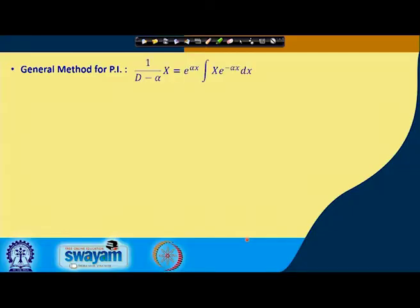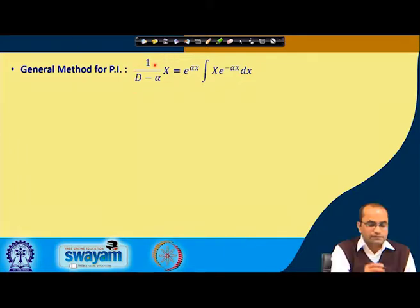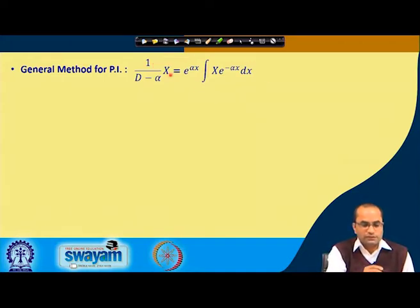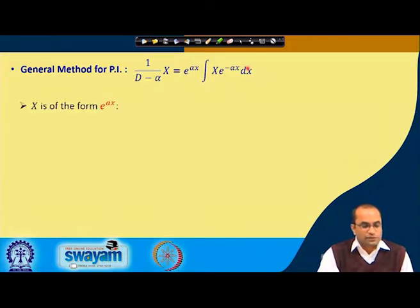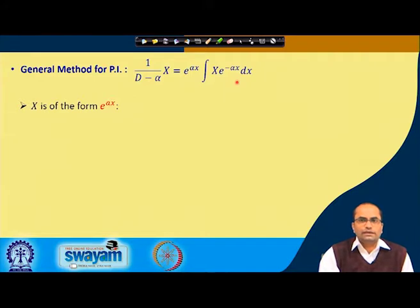The general method for getting the particular integral was: 1 over (D minus α) applied on X — where X is a function of small x — gives us e^(αx) times the integral of X·e^(-αx) dx. This was a very general form which can be used for getting any particular integral.